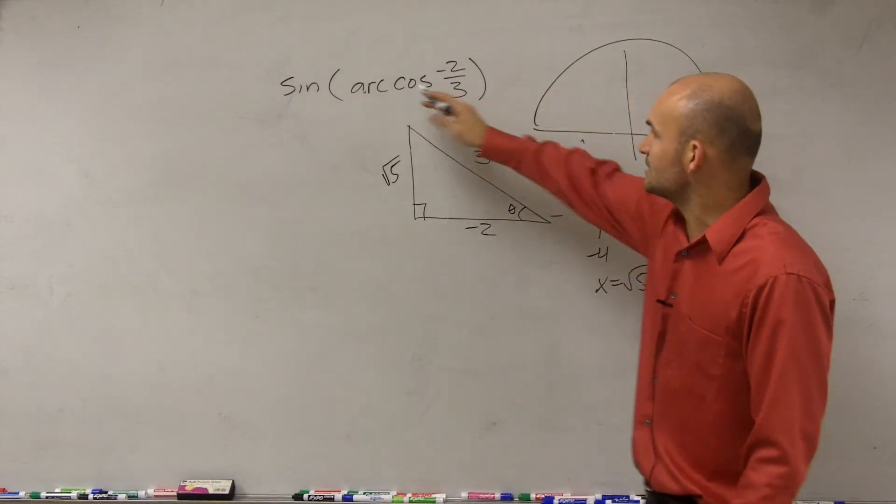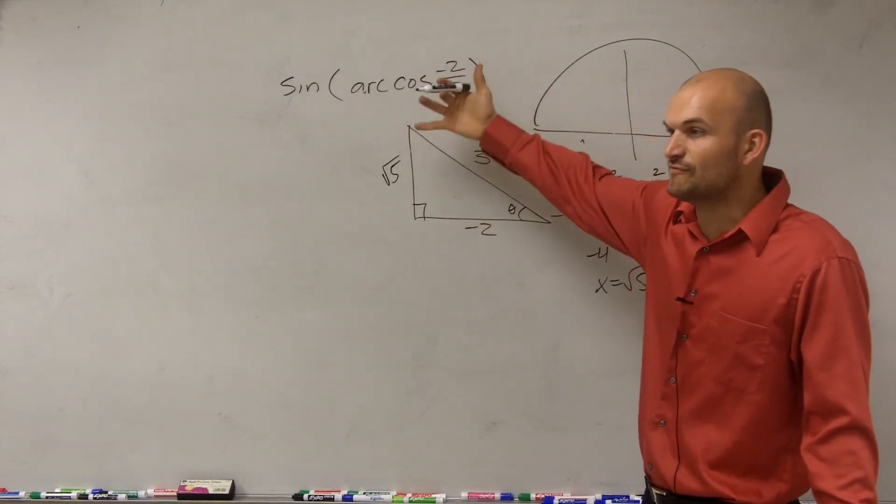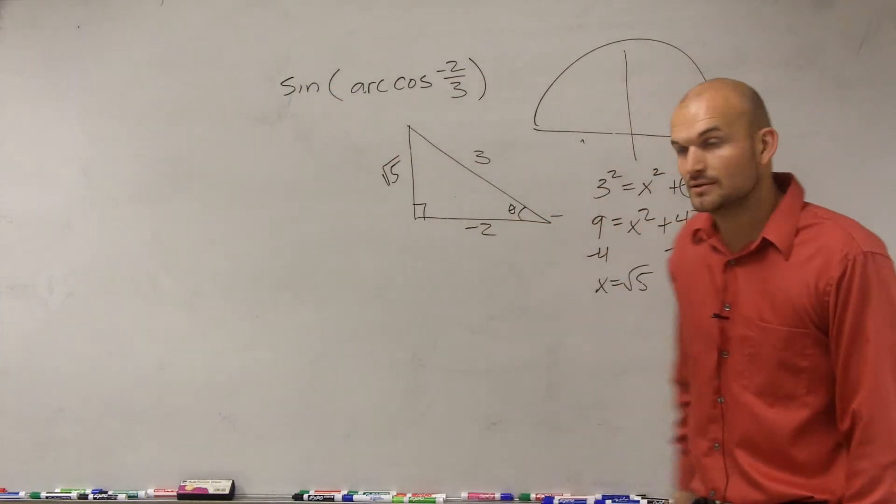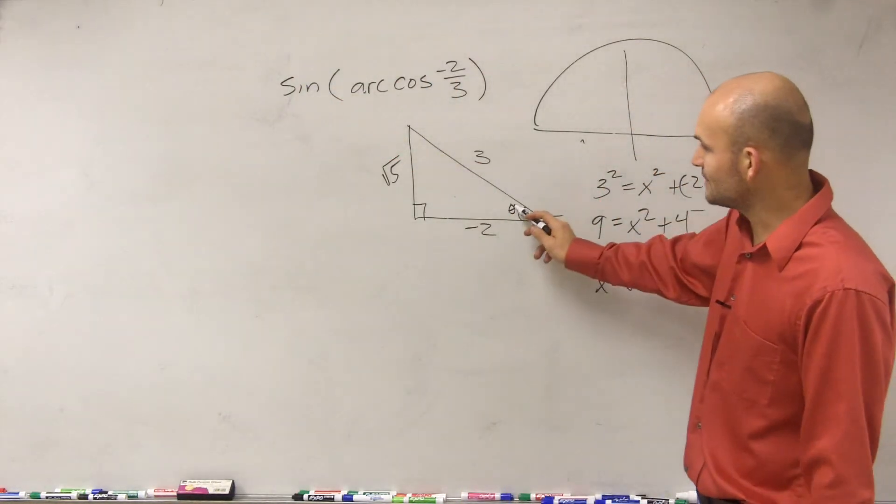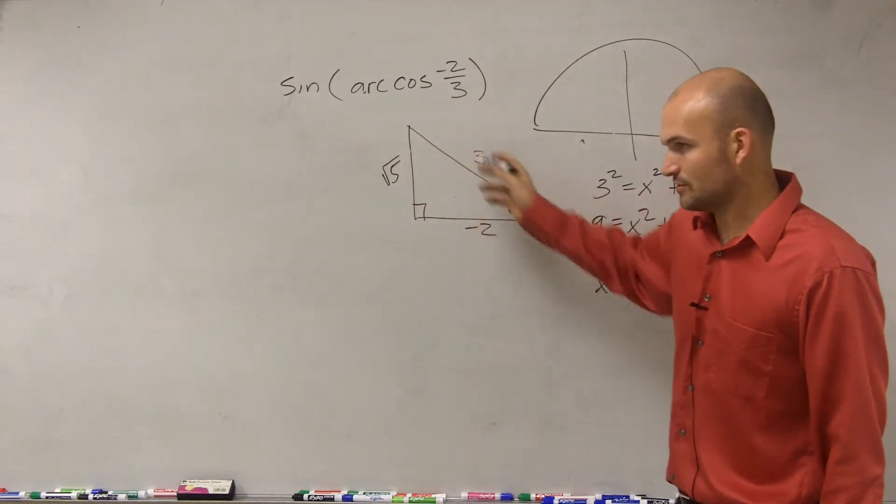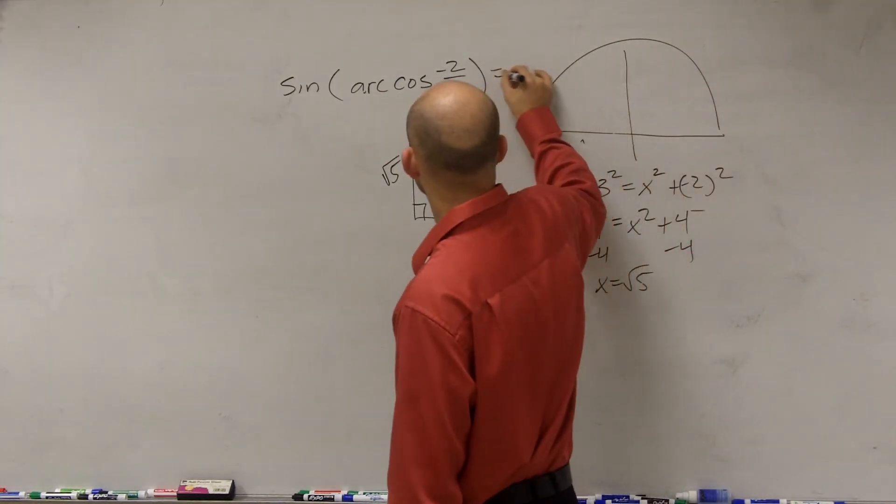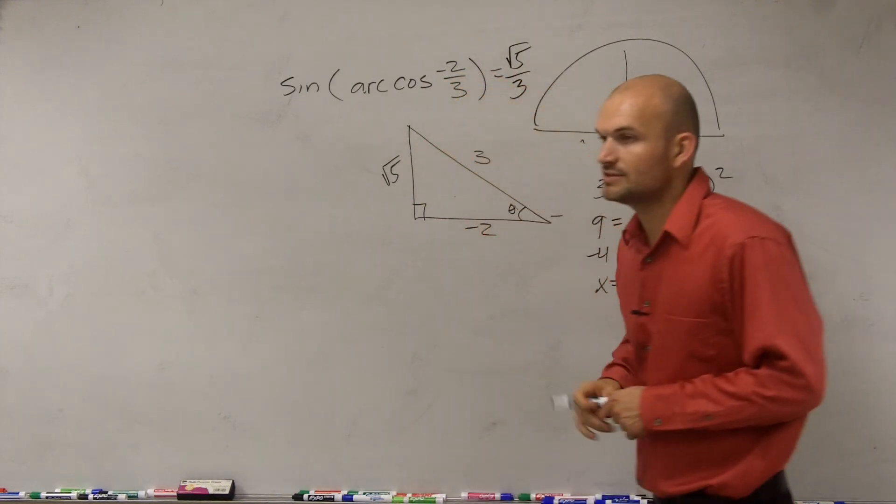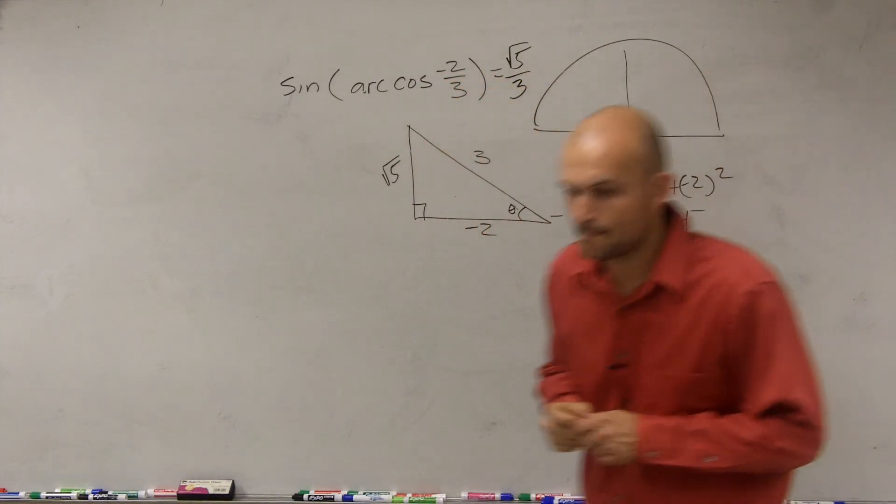However, now what we're trying to do is once we've now created the inverse for the correct triangle, now we need to determine what is the sine of that triangle. So the sine of theta is going to be opposite over hypotenuse. So the final answer is square root of 5 divided by 3. Any questions?